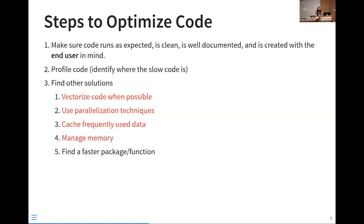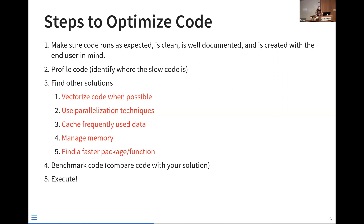Lastly, you can find a faster package or function. Data Table is a great example — it helps you make modifications to your data in place instead of making copies, and allows for faster aggregations. The next step is to benchmark your code, comparing the speed of your code against other potential solutions. And finally, execute with your updates.